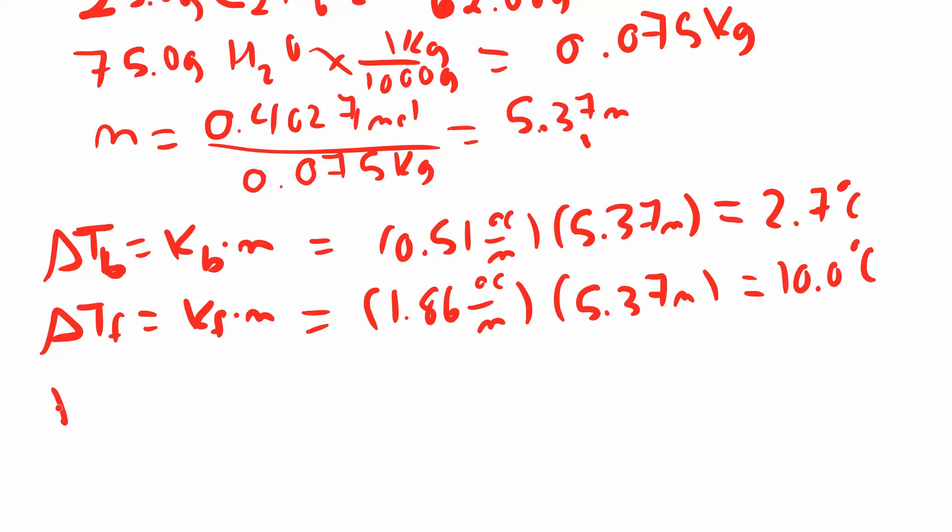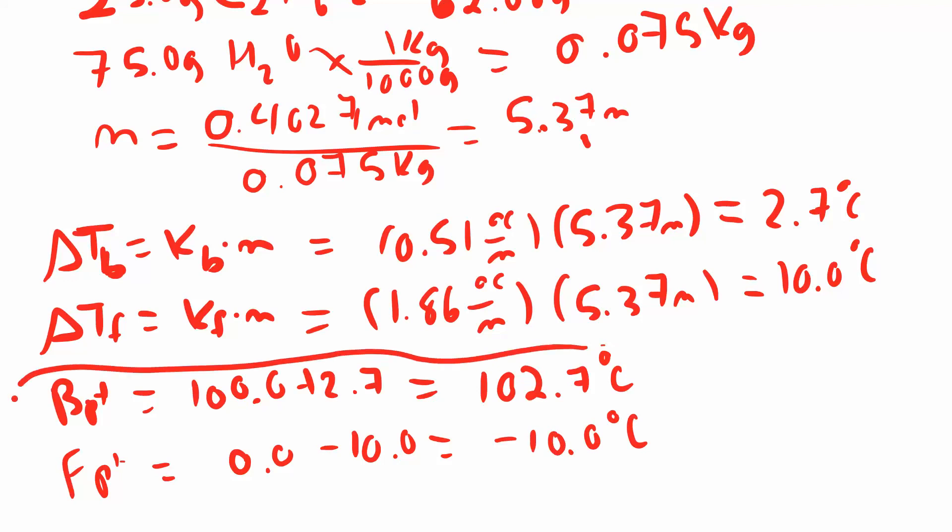If you're looking for the new boiling point, it's 100, because that's what the boiling point of water is, plus 2.7. So the new boiling point is 102.7. Make sure you add that to 100. And the freezing point was zero, and now we're going to subtract 10 because it's going to get lower. So it's like negative 10 degrees Celsius. So those are your new boiling points and freezing points there.